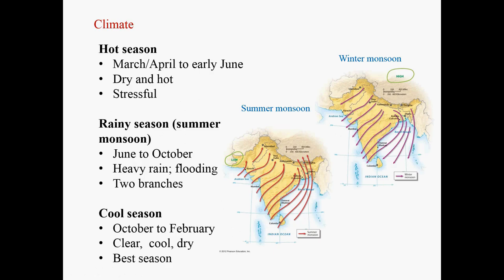The last season is the cool season, from October to February. The rain largely stops, so you have clear weather, low humidity, and the temperature becomes cooler day by day as part of the winter monsoon. When the air is dry and cool, it is comfortable outdoors. This is the best season to travel to South Asia.